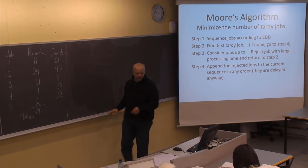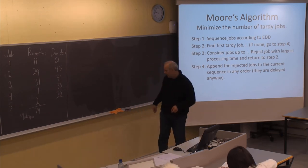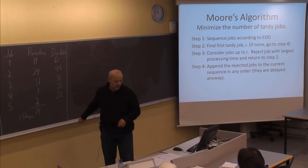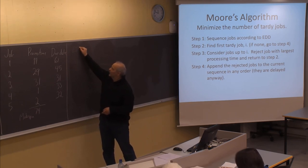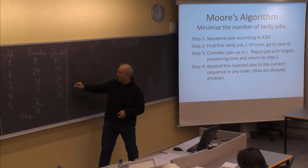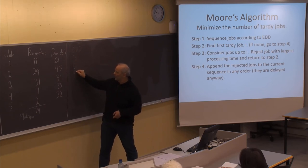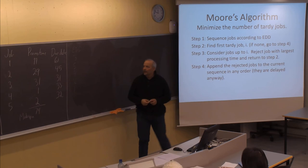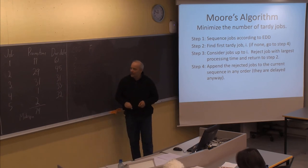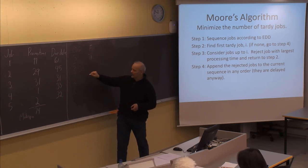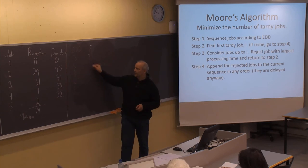Let's apply this to the same job example using Moore's algorithm. We start with the earliest due date schedule, which gives the sequence: job three, five, four, two, one. With this sequence, the flow time is 31 for job three. Job number five takes two more days, giving 33.